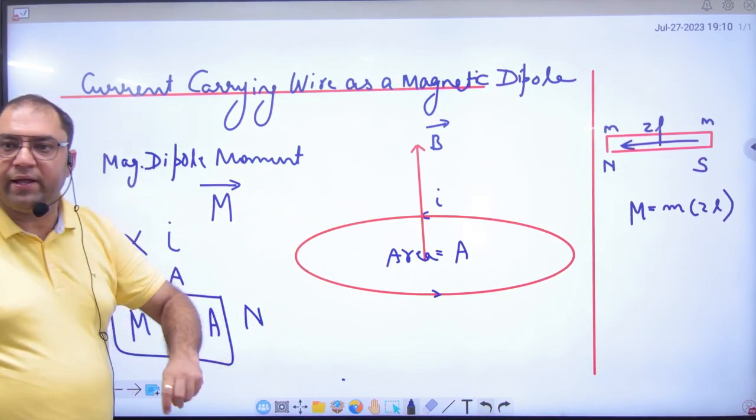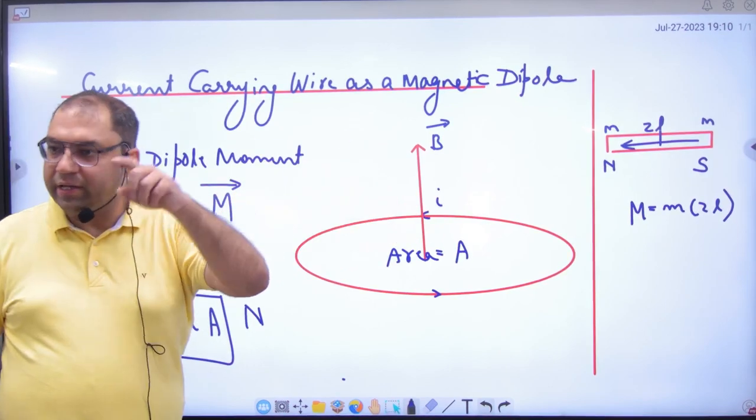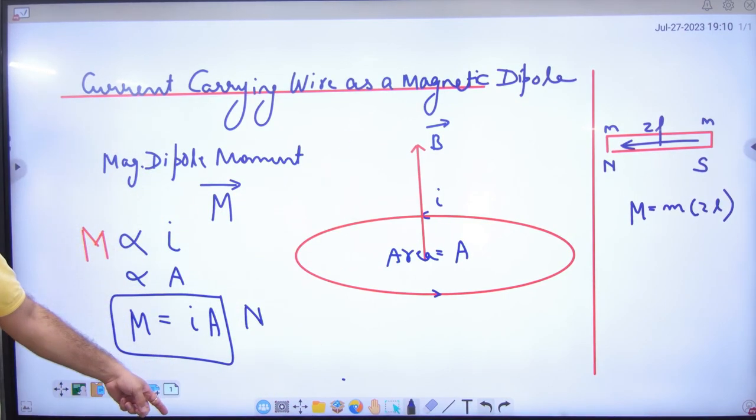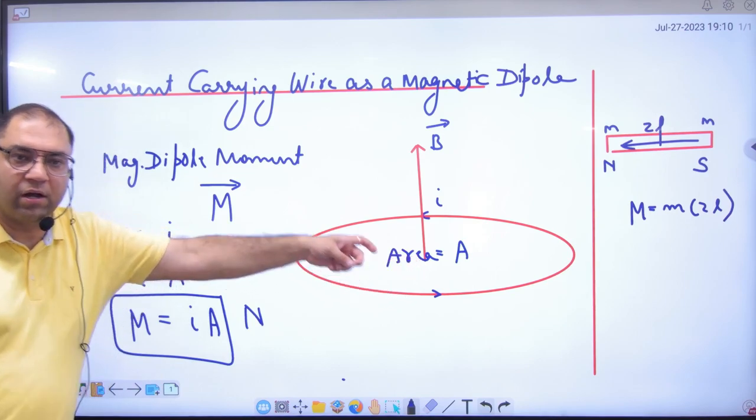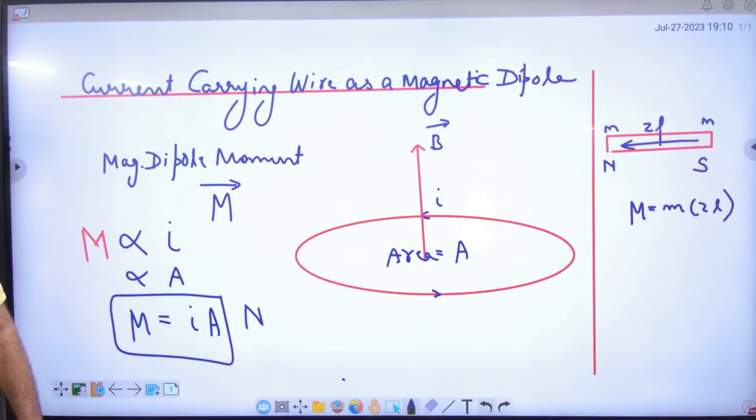So you will make these two diagrams in your formula register. Bar magnet is different, current carrying wire is different. Note both these formulas.